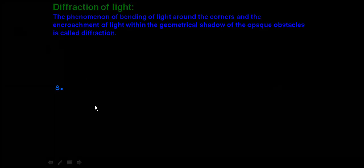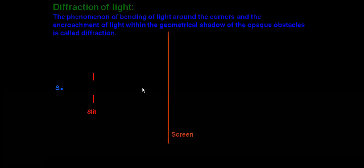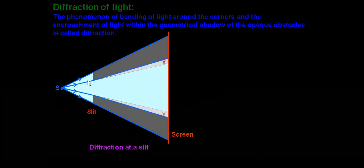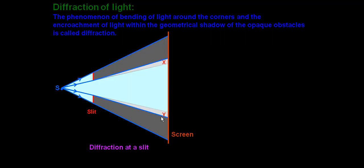Here the source is a point source. It will emit light in all directions in the form of rays or waves. When the light travels from the source through this slit it will approach the screen. We expect that it will travel in a straight line, but due to the bending of light at the corners of the slit there will be encroachment of light in the shadow region. As seen in the diagram, the light has entered the shadow region, which is called diffraction at a slit.